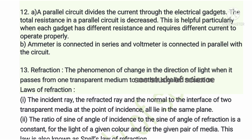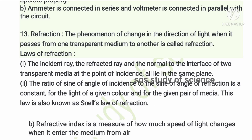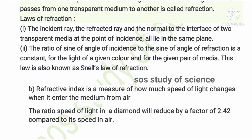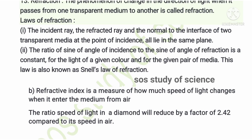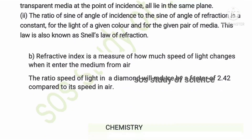They also asked how ammeter and voltmeter are connected in a circuit: the ammeter is connected in series and the voltmeter in parallel. The thirteenth question asks about refraction of light, two laws of refraction, and the refractive index of diamond, which is 2.42. The refractive index of light is a measure of how much the speed of light changes when it enters from air into a medium — the speed of light in diamond reduces by a factor of 2.42 compared to its speed in air.